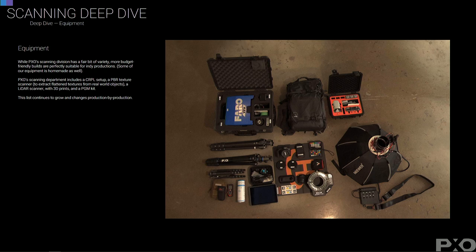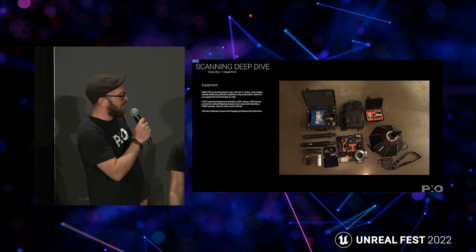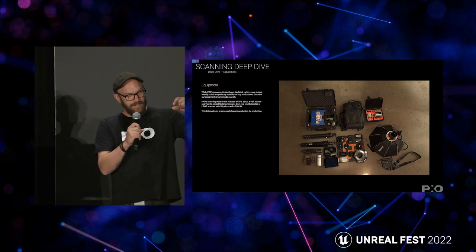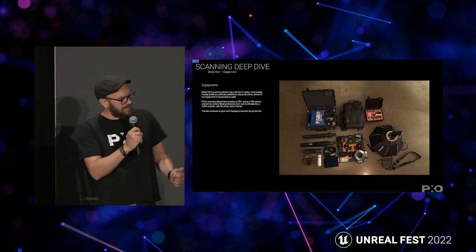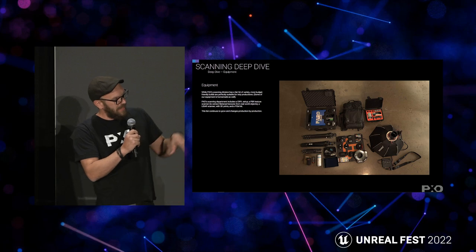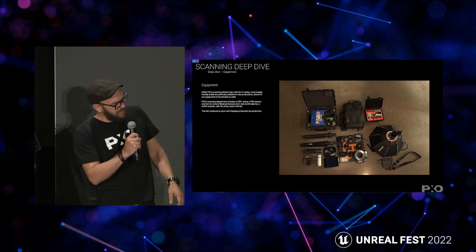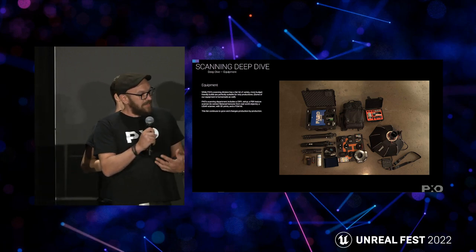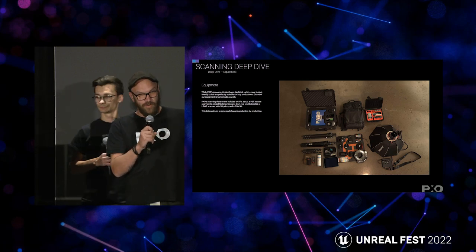A recent addition to our pack is the PBR texture scanner I built. It's a pretty simple setup — essentially a light hood with eight LED strips on the inside that I activate one by one. There's room to place your camera and take a picture for each light. This allows us to capture very high-detail albedo and normal maps that we use to augment our assets — super useful for fabric, grounds, and all kinds of textures.